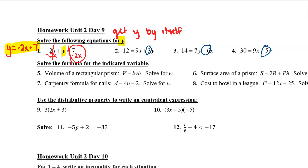Alright, so number 5. It says the volume of a rectangular prism, so V equals length times width times height — L times W times H. And we're supposed to solve for W, so we're supposed to get W by itself, which means we need to get rid of the L and the H. L times W times H means we have to get rid of the L and the H that are multiplied with W.